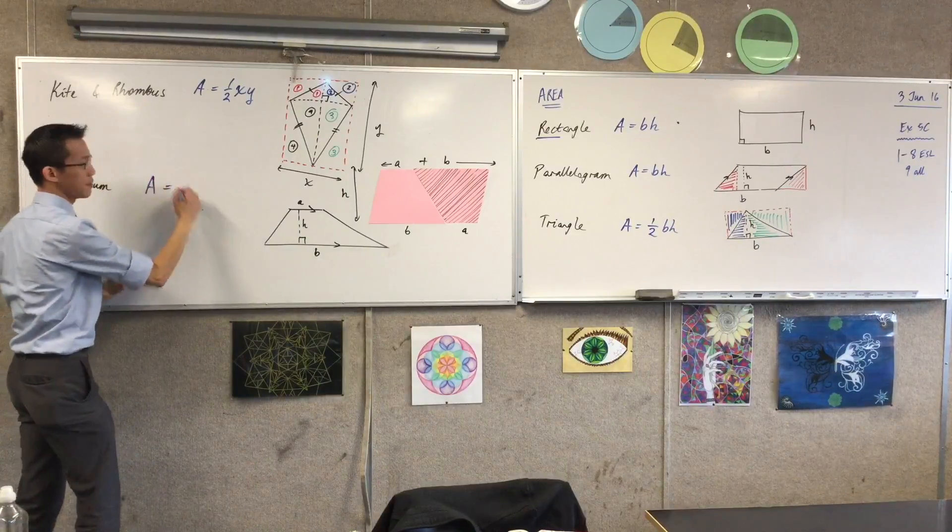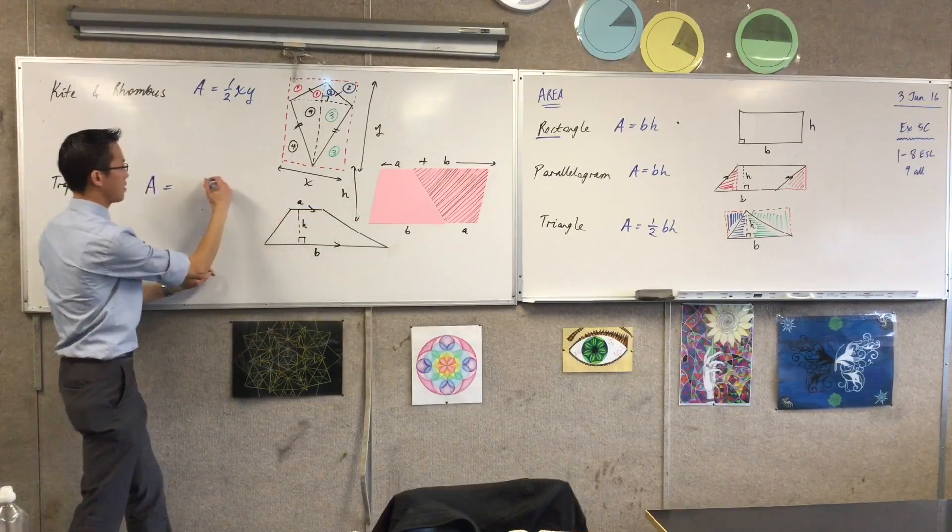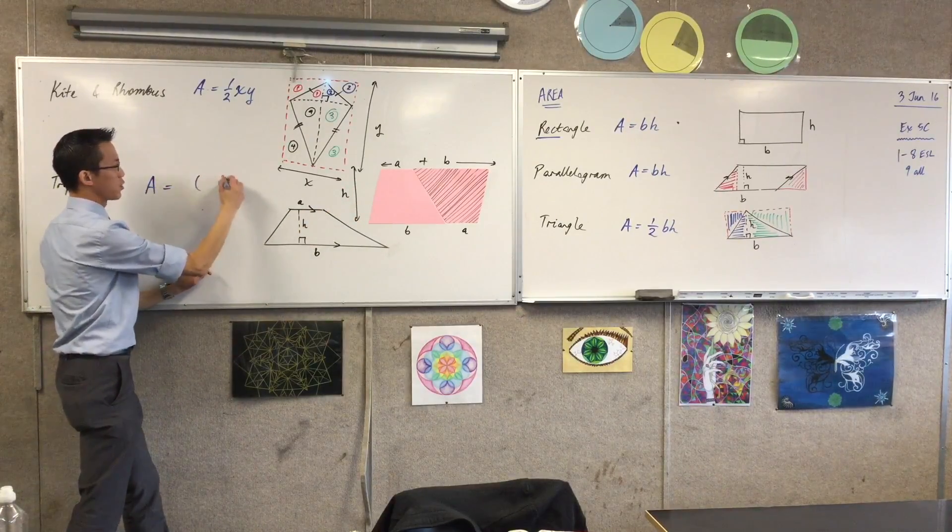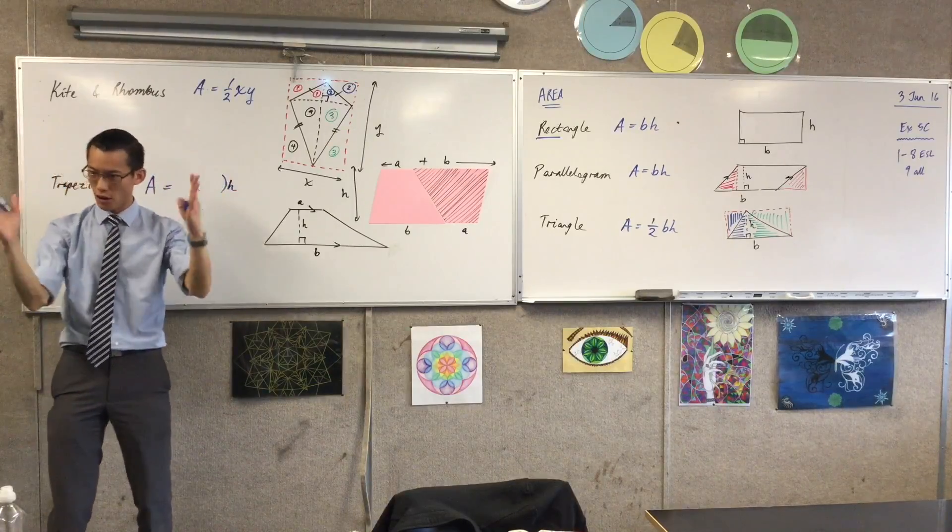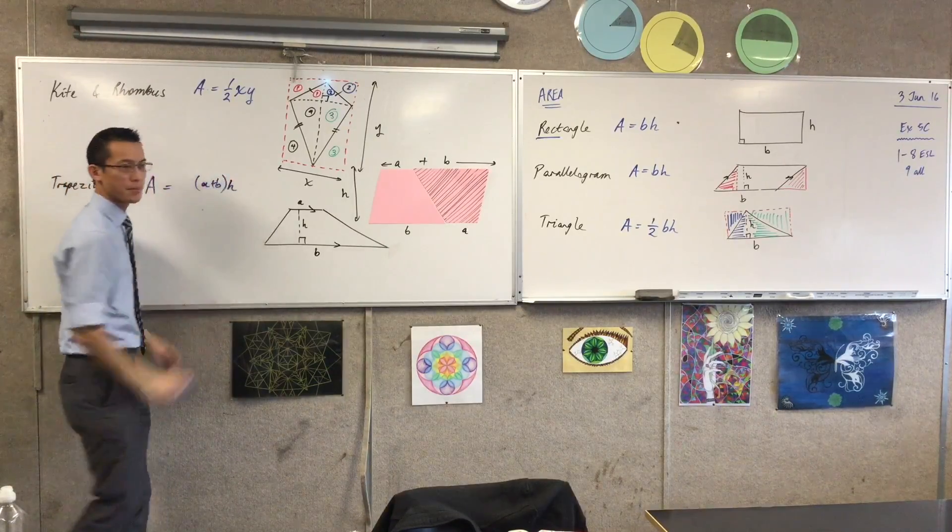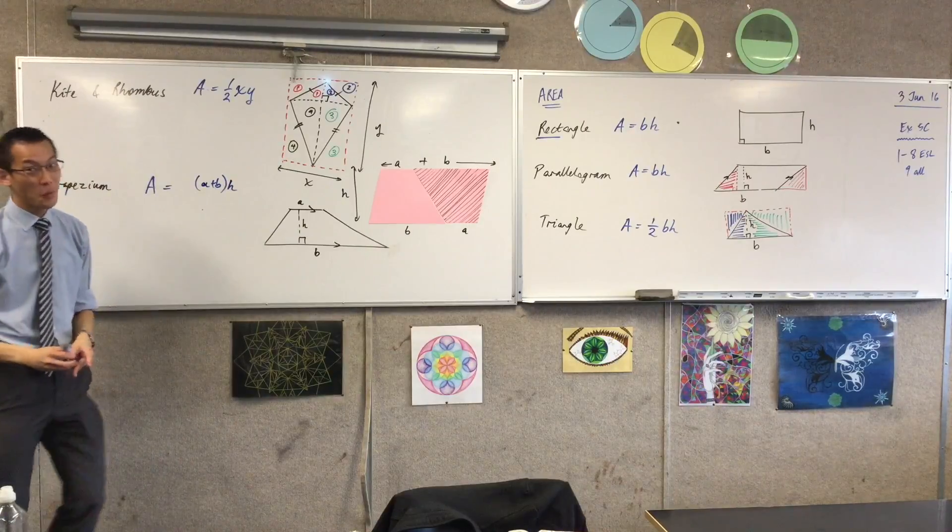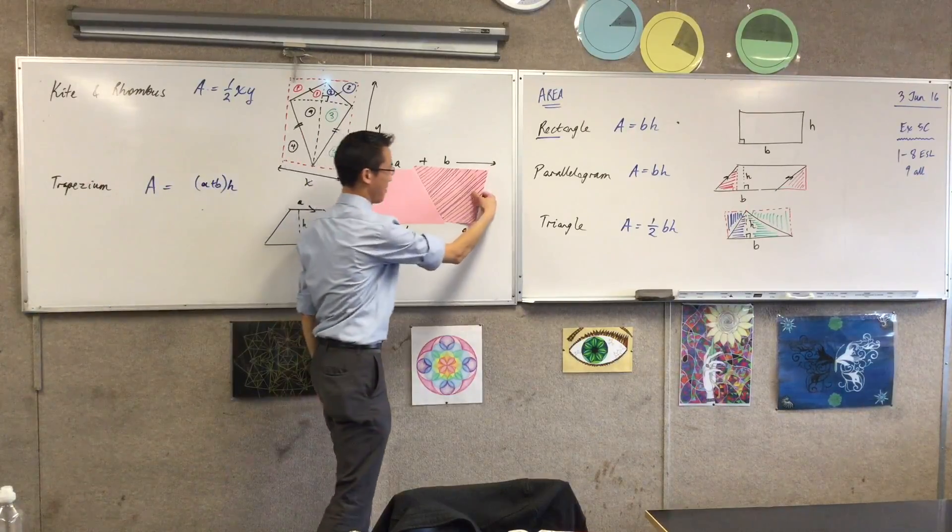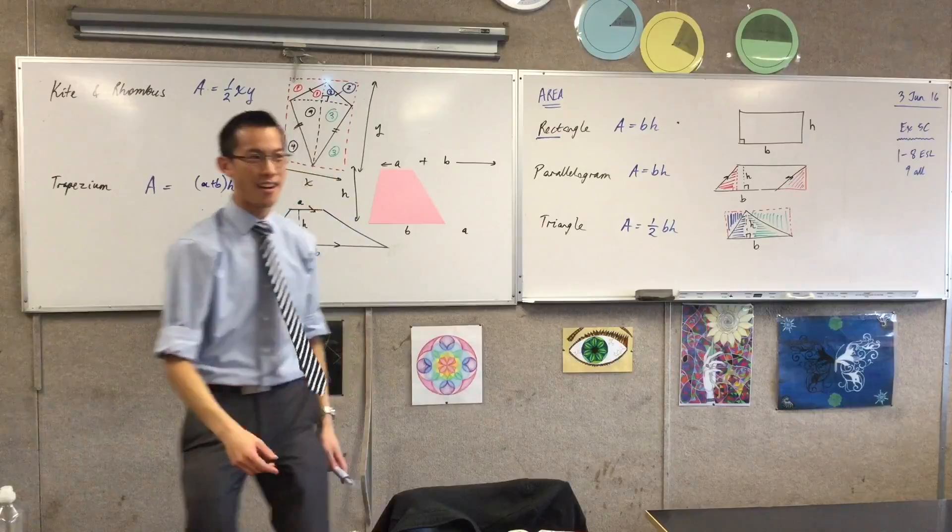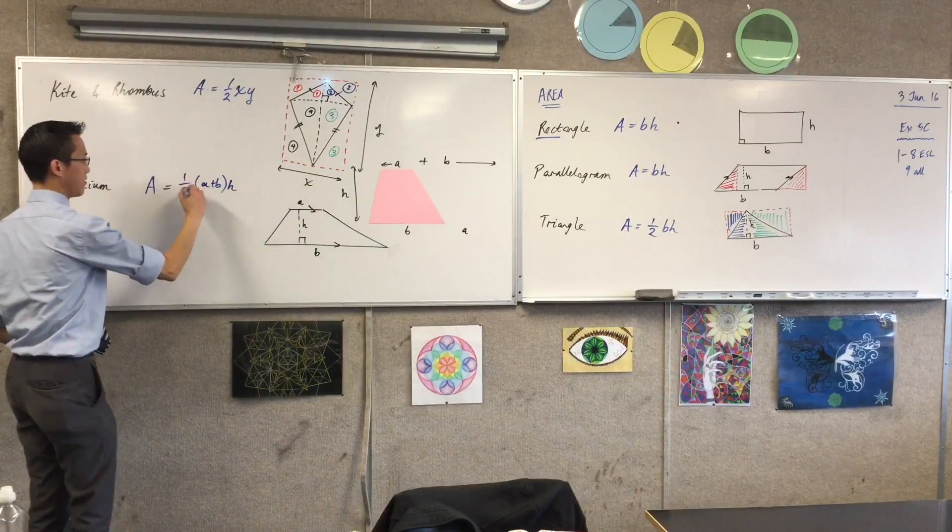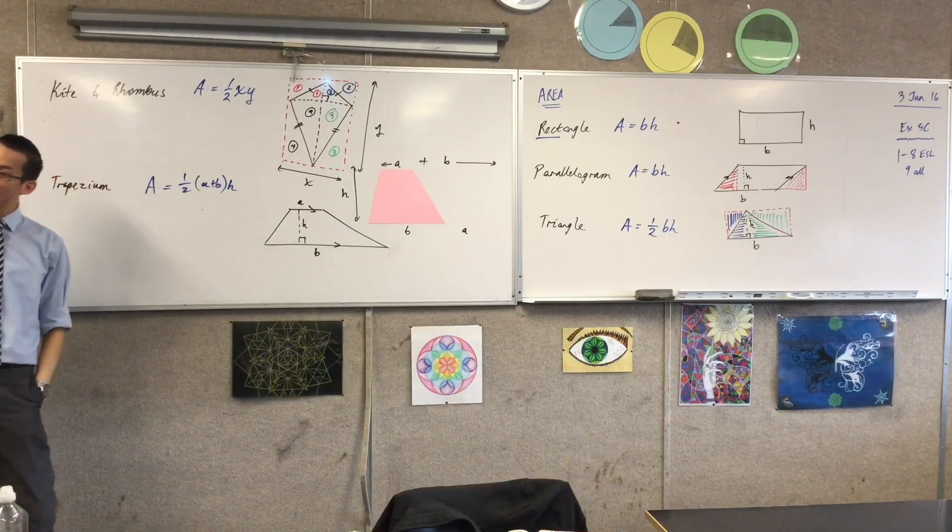It's the perpendicular height, h, and it's also the width of the whole base, right? Which we just described as a plus b. But hold on, I don't want actually the whole parallelogram. I only want half of it.